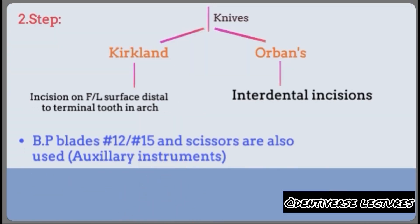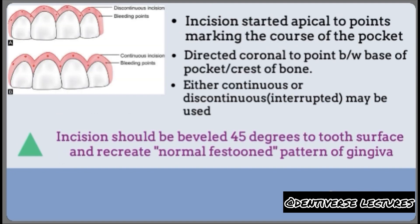The second step is incisions. Two types of knives are used. First, with Kirkland knives, an incision is made on the facial and lingual surface distal to the terminal tooth in the arch. Second, with Orban's knives, an interdental incision is given. BP blade number 12/15 and scissors are also used. The incision starts apical to the points marking the course of the pocket, directed coronal to the point between the base of the pocket and the crest of the alveolar bone. Either continuous or discontinuous incision may be used. The incision should be beveled at 45 degrees to the tooth surface to recreate the normal festooned pattern of the gingiva.